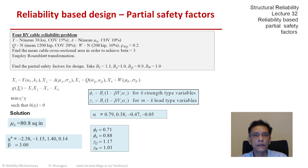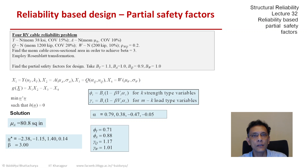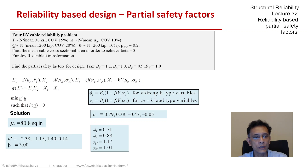This is all quite consistent with our expectations. The load W has lower variability — its COV is 10% compared to Q whose COV is 20%. So we would expect a higher partial safety factor with Q than W, and that is what we see here. Yield has a COV of 15% and A has a COV of 10%, so the yield partial safety factor is lesser than that of A. These all agree with our intuition: the load-type partial safety factors are greater than one, and the strength-type are less than one.